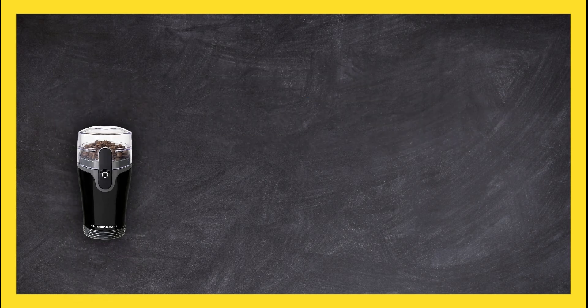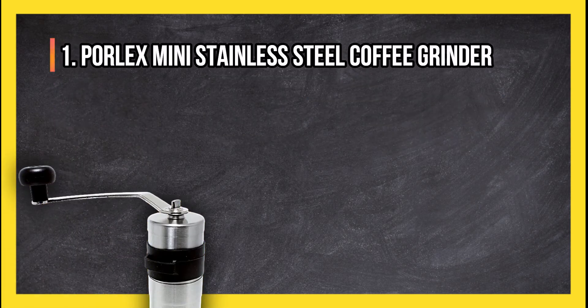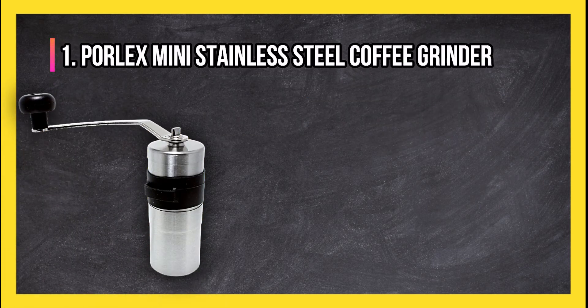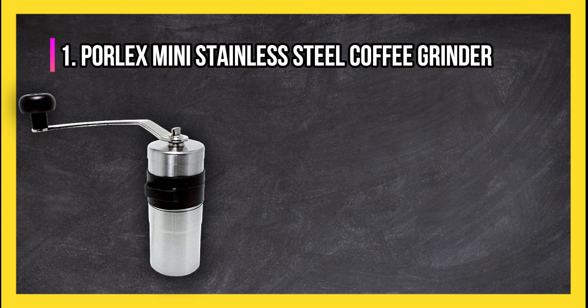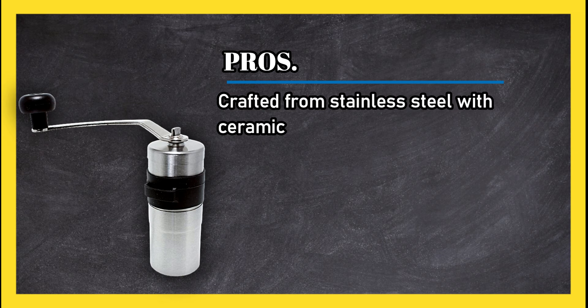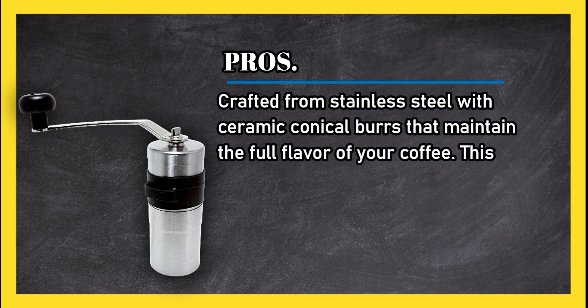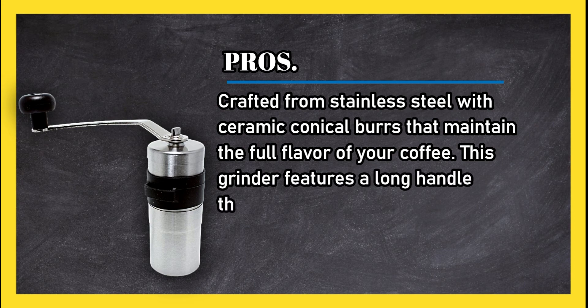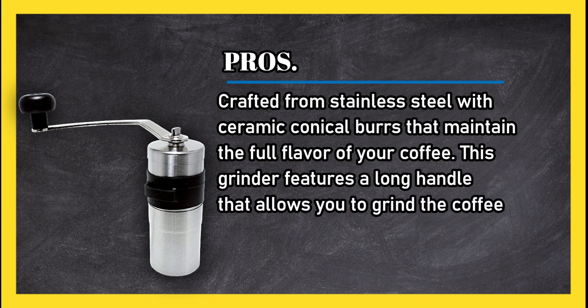At number one: Paul X Mini Stainless Steel Coffee Grinder. Pros: Crafted from stainless steel with ceramic conical burrs that maintain the full flavor of your coffee. This grinder features a long handle that allows you to grind the coffee beans more easily than competitors' models. Great for grinding on the go.